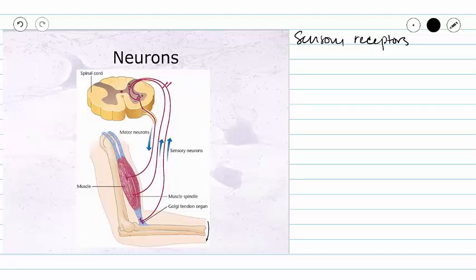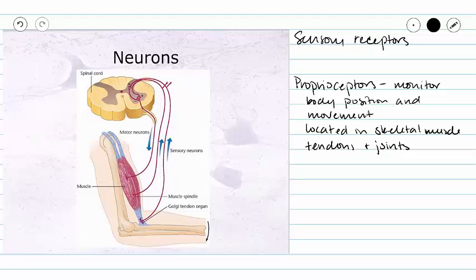This last type of sensory receptor is not one that is thought of very frequently when you are not studying anatomy and physiology, and they are called proprioceptors. Proprioceptors monitor body position and movement, and their sensory receptors are located in skeletal muscles, tendons, and joints.